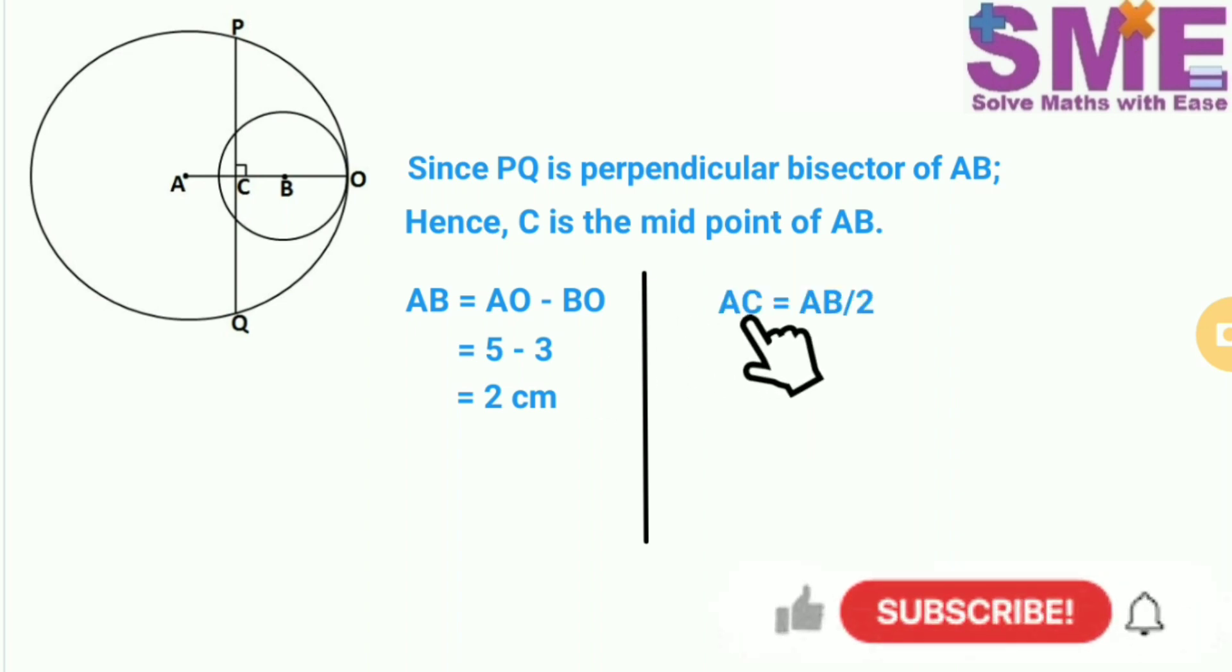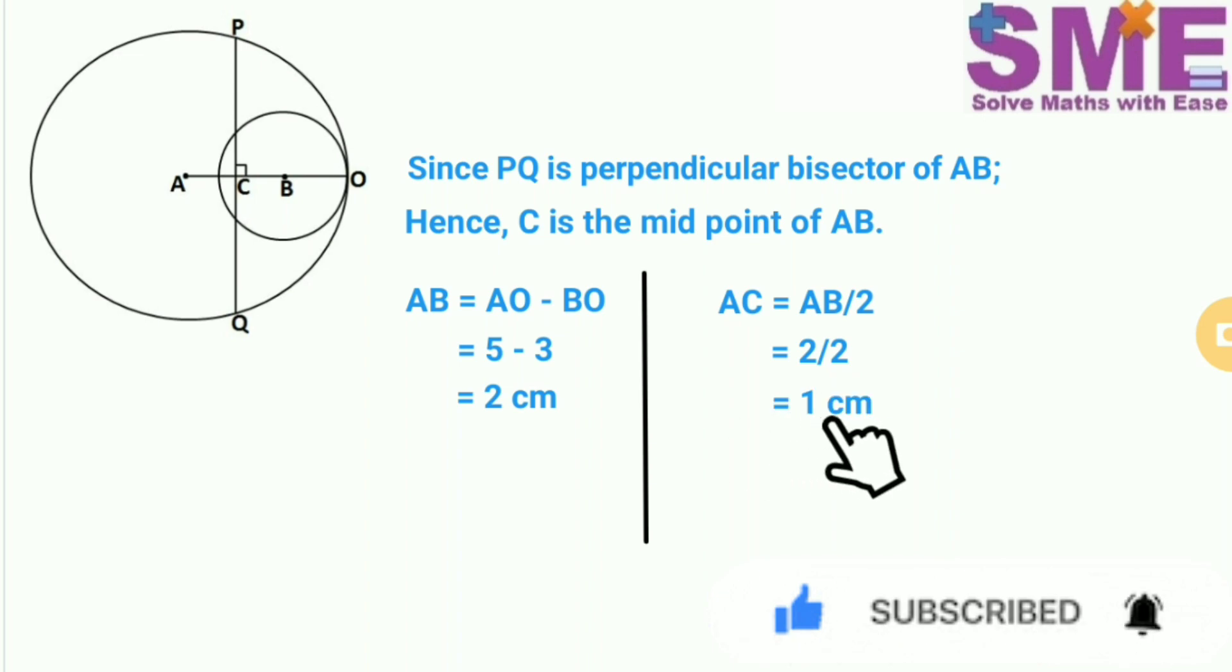Now AC will be half of AB because PQ is the bisector of line segment AB. So we get the length of AC as 1 cm.